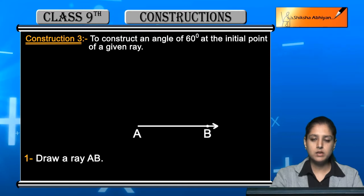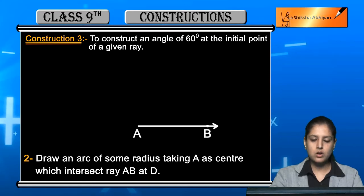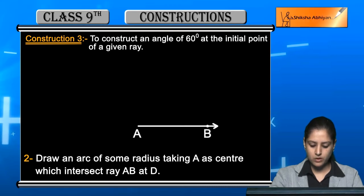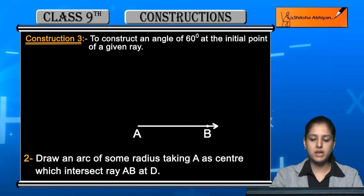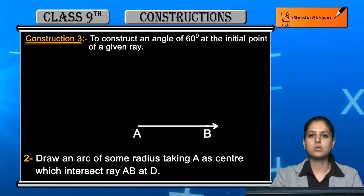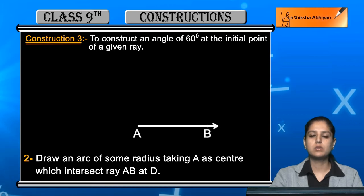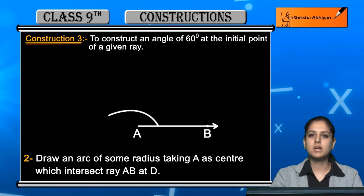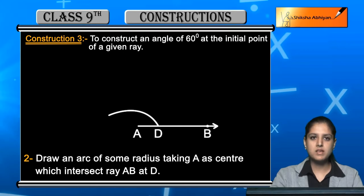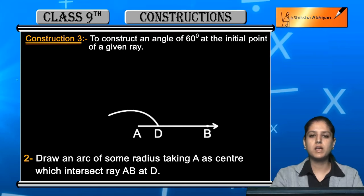दूसरा step है: draw an arc of some radius which intersects AB at D, by taking A as center. Compass लेने के बाद उसको एक considerable amount खोल लीजिए — ज्यादा बड़ा नहीं, ज्यादा छोटा नहीं। Compass को A point पर रखकर एक arc draw कीजिए जो line AB को cut करे। जहाँ पर वो arc line AB को cut करे, उस point को नाम दे दीजिए D।